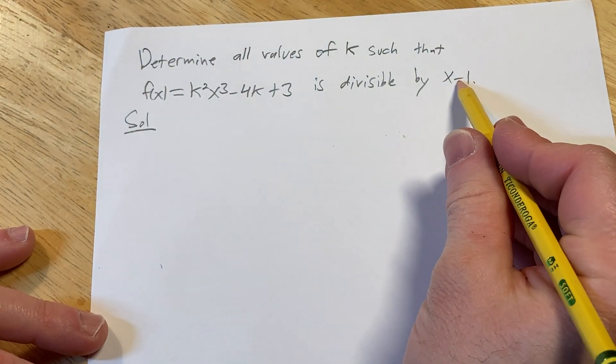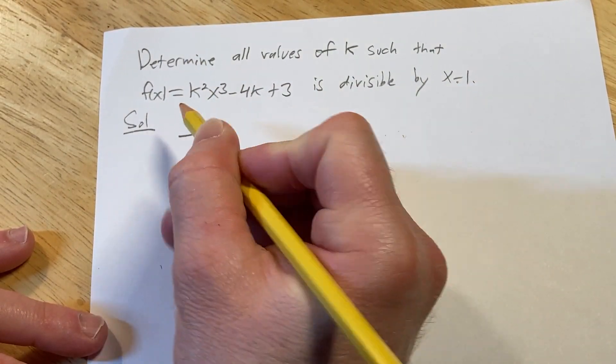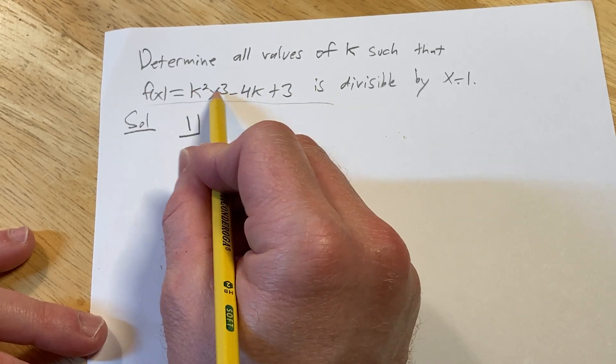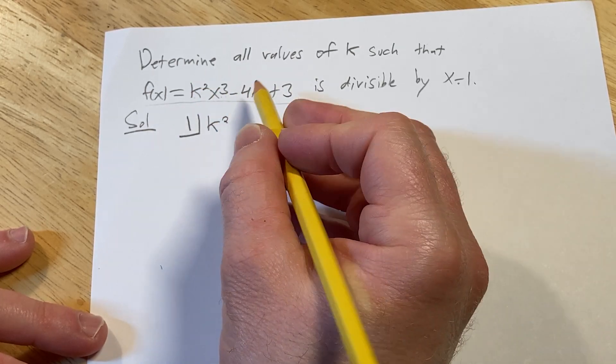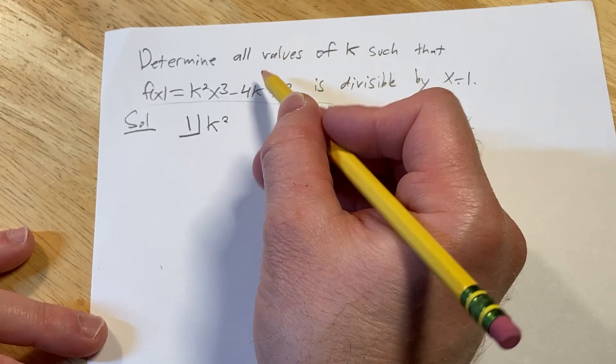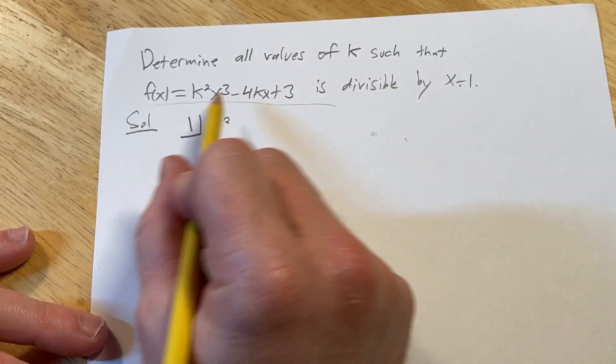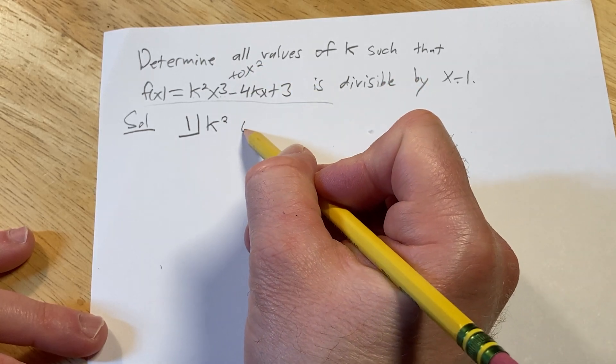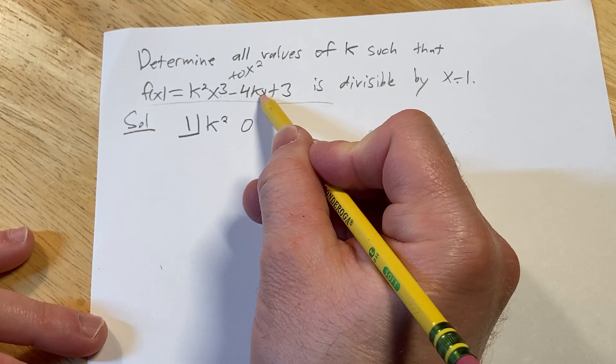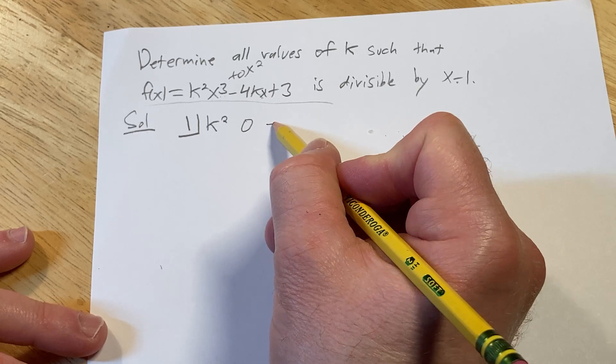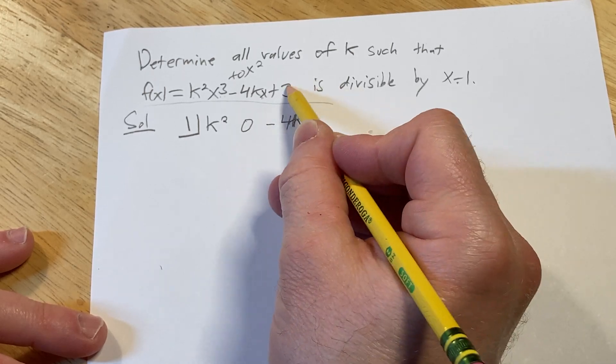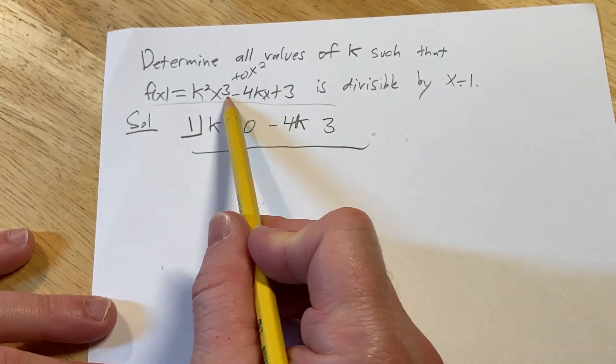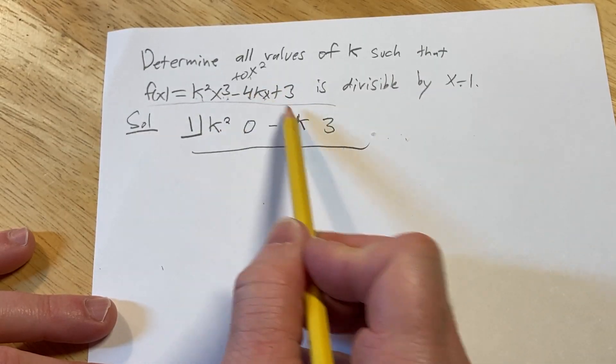Solution: you start by switching the sign here. So I'm going to put a 1 here and a little bracket. Then you want to write down the coefficients of f(x). The coefficient of x cubed is k squared. Oh, I made a typo here, there's an x missing. The coefficient of x squared is 0, it's not there but you have to write it. Then the coefficient of x is minus 4k. And then here we have 3. So let's check that: we have k squared, 0, negative 4k, 3.